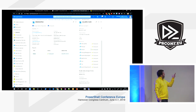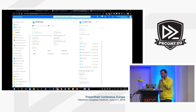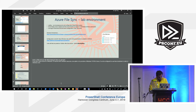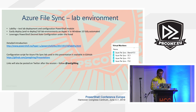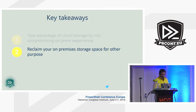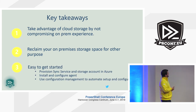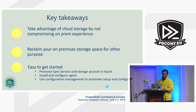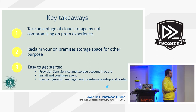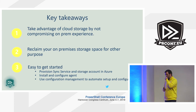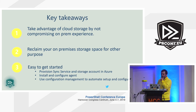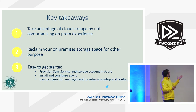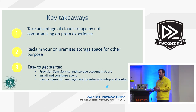This server can be running Server Core or any headless configuration, making it easy to fully automate the installation. The key takeaways: take advantage of cloud storage without compromising the on-premise experience — end users won't notice any difference. Reclaim space on expensive local SAN, offload on-premise backup using Azure Backup, and use Windows Admin Center or PowerShell DSC to automate all the setup.